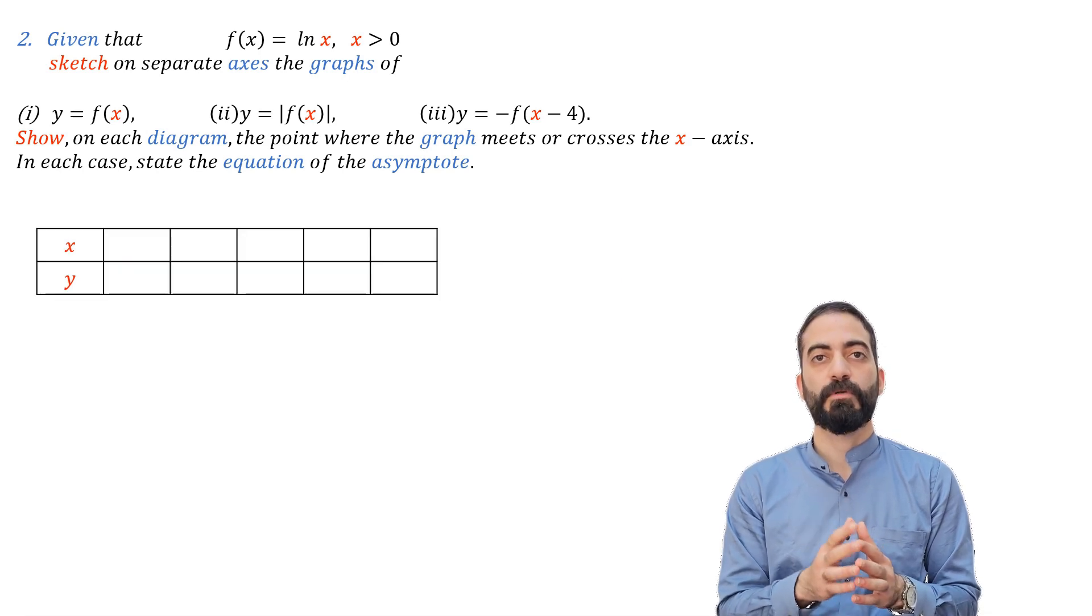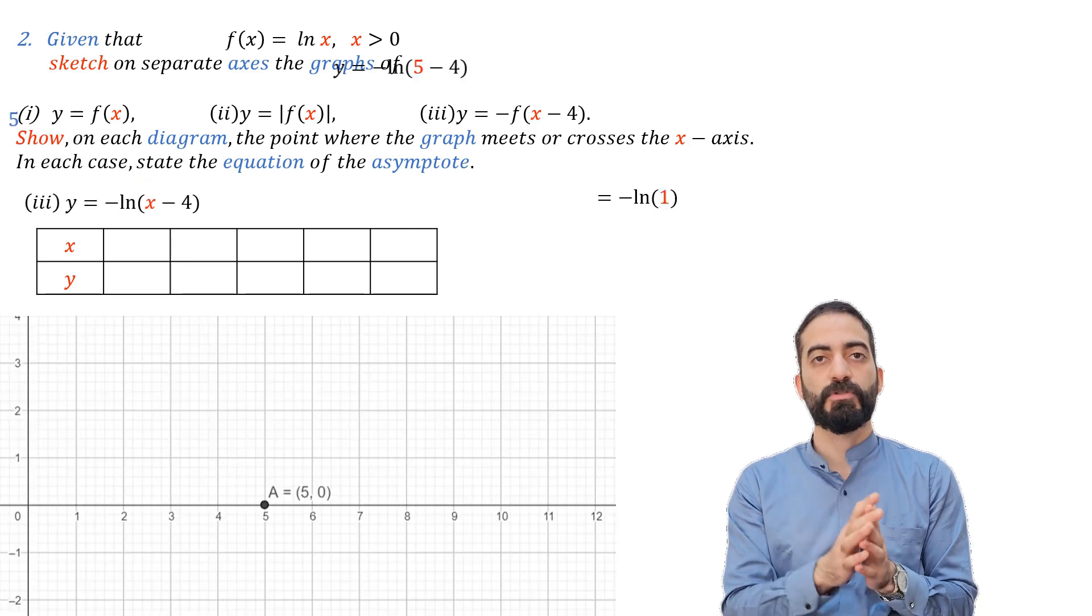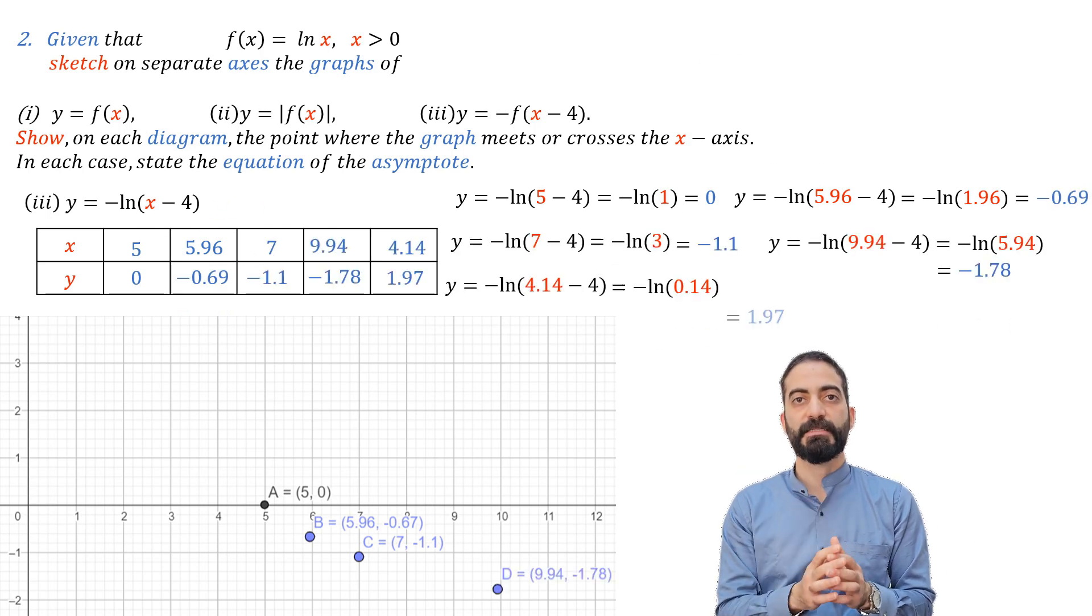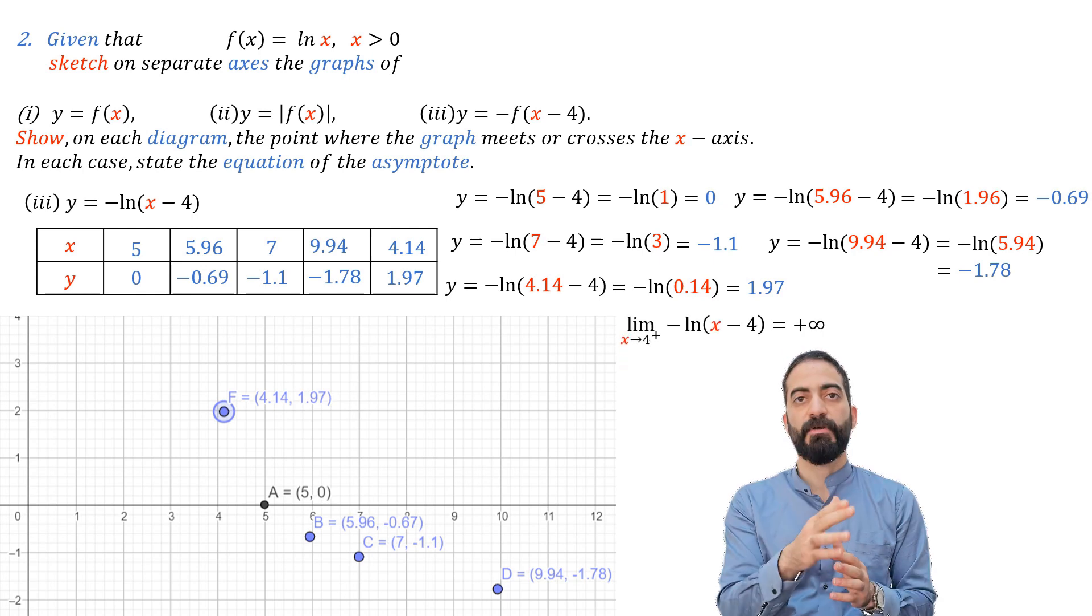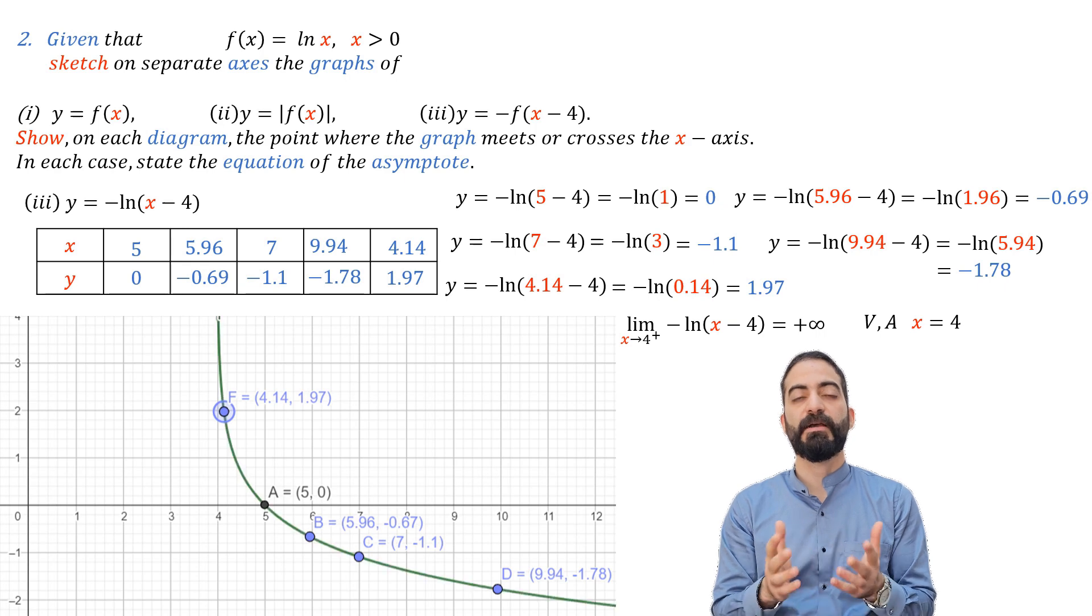Now we come to y equal minus ln(x minus 4). We do the same thing. We choose points for x randomly like this. We also have the limit of minus ln(x minus 4) when x tends to 4 plus equal plus infinity. This means that x equals 4 is a vertical asymptote. And now we connect the points together to get the graph.